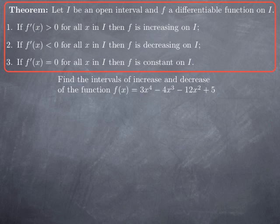According to the theorem, that depends on where f' is positive and where f' is negative. So we start by calculating f'. Since this is a polynomial, it's easy to obtain using the power rule for x⁴, x³, and x². We obtain f'(x) = 12x³ − 12x² − 24x.